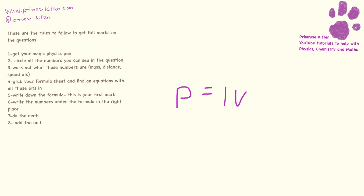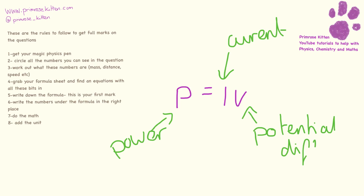Here we have a capital P which is for power. We have current and potential difference. Our potential difference is measured in volts, our current is measured in amps and power is measured in watts.